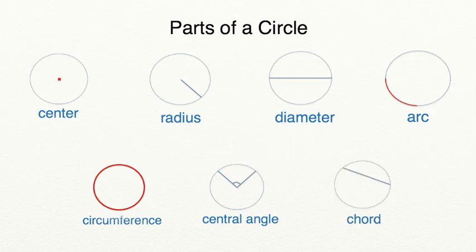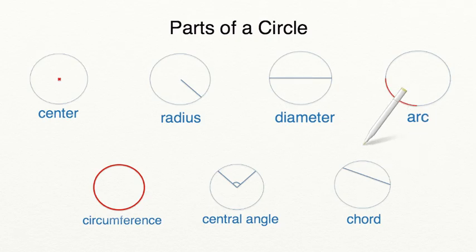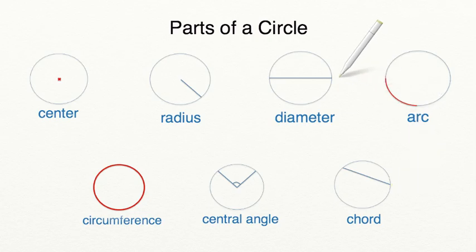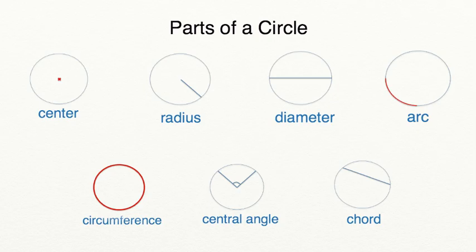And lastly we have the chord. The chord is a straight line which reaches from one point of the circle to another point on the circle. However, unlike the diameter, the chord does not have to go through the center of the circle.